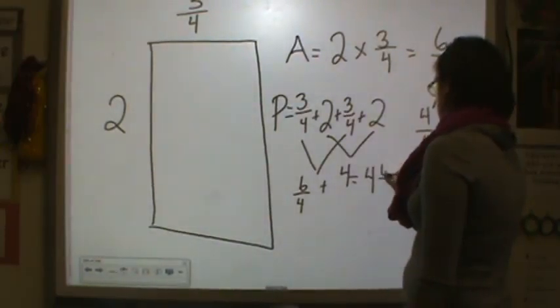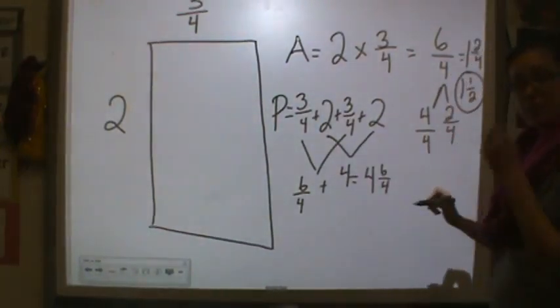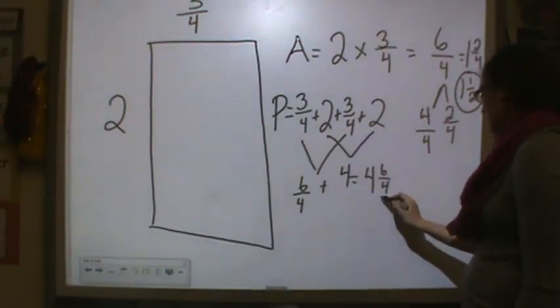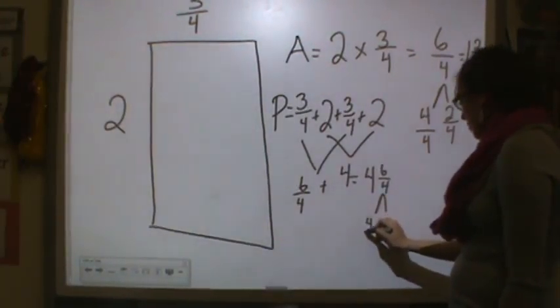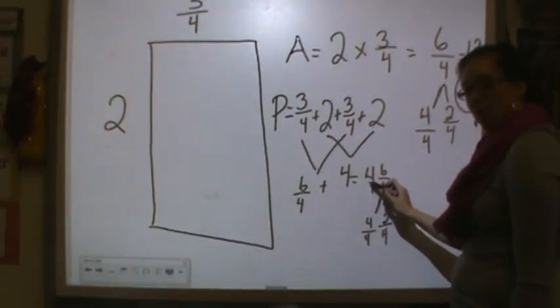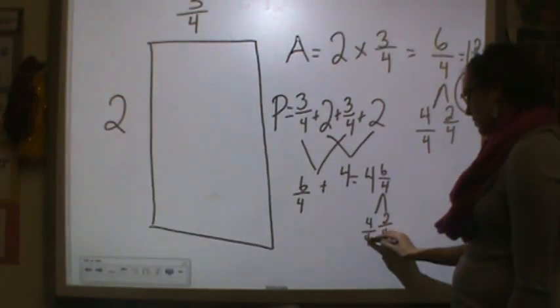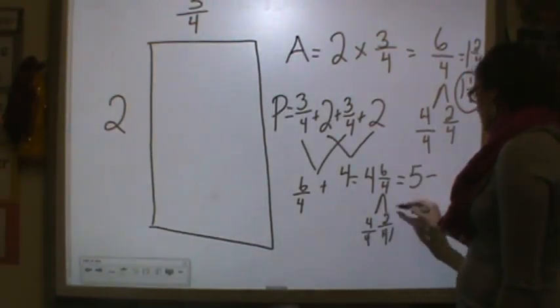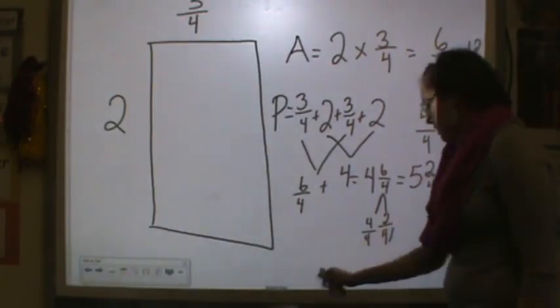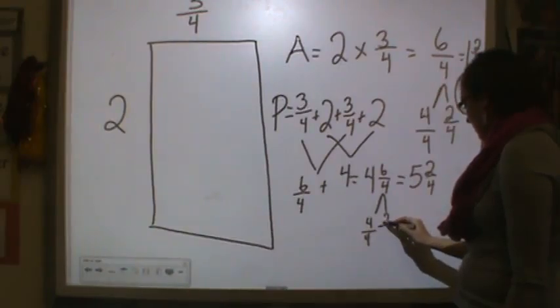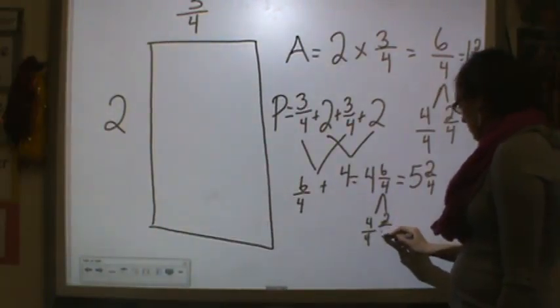4 and 6/4. Now we need to make this improper fraction part of our mixed number. So you'd have 4/4 and 2 more fourths. So you'd have 5 and 2/4 because 4/4 is 1 whole and 2 more fourths. All right, so that would be how you would find the perimeter.